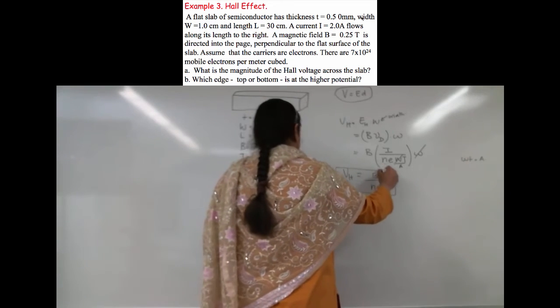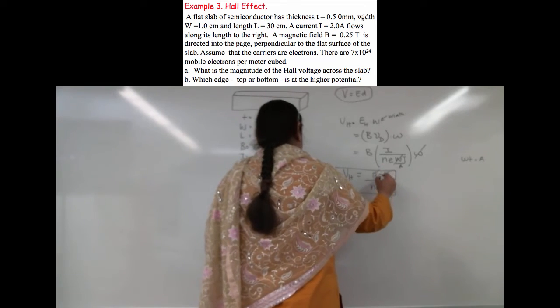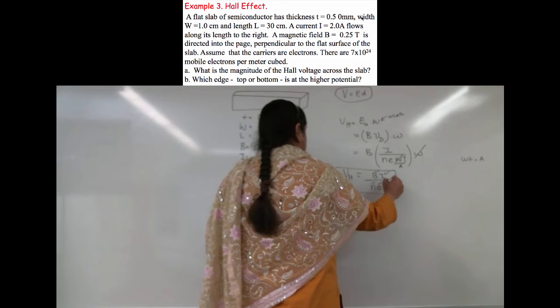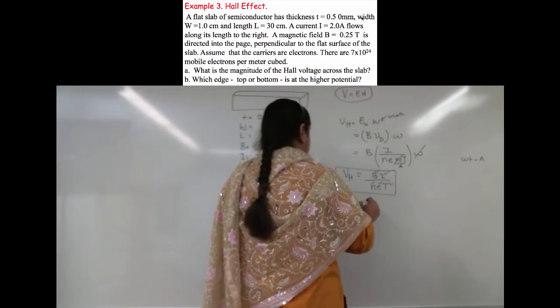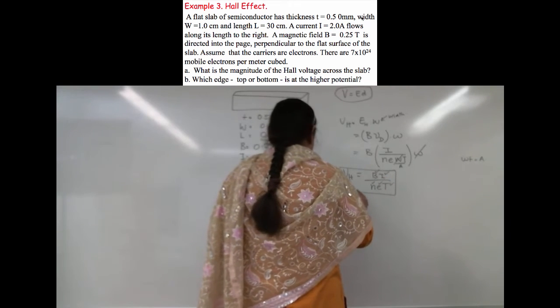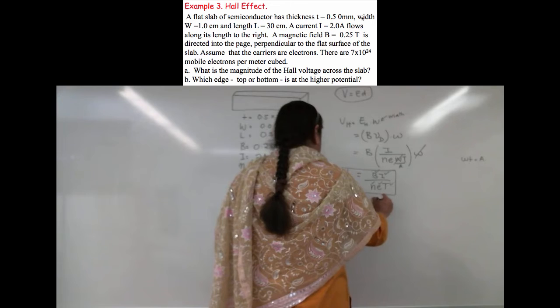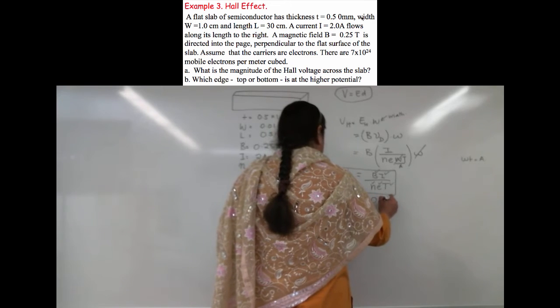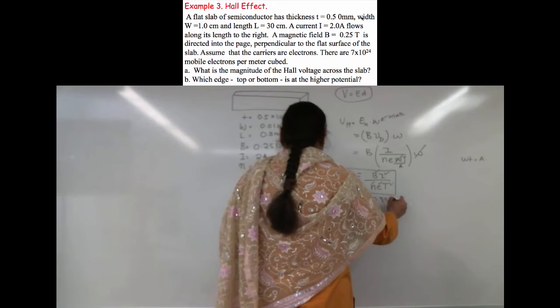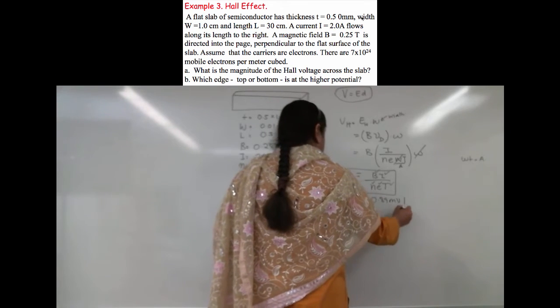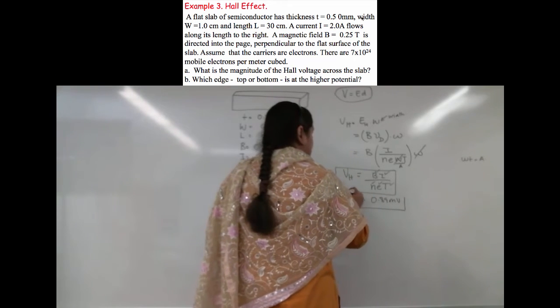We have B, we have I, we have N, we have the charge of the electron, and we have the thickness. Plugging all those values in gives us the Hall voltage.